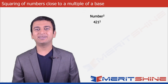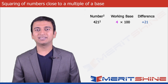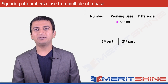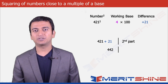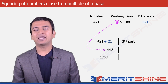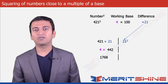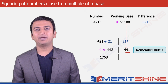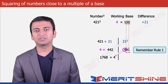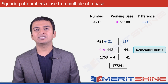Now we can club these two parts and get our final answer as 157609. Let us now try to find the square of 421. Here our working base would be 4 into 100 with 4 as our multiplier and the difference would be plus 21. The first part would be 421 plus 21 giving us 442. Since our multiplier is 4, we multiply 442 with 4 giving us 1768 as our first part. The second part would be 21 squared giving us 441. Since the number of zeros in our working base is 2, we have only two digits in the second part, so the extra 4 will be carried over to the first part making it 1768 plus 4 equals 1772, and we will be left with 41 in the second part. Clubbing these two we will get our final answer as 177241.